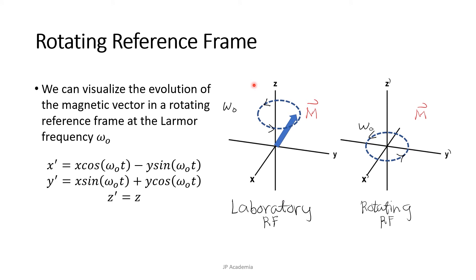Given that the net magnetization vector is rotating at the Larmor frequency, we can conveniently visualize the magnetization vector in a reference frame or a rotating reference frame at the Larmor frequency. We can express the rotated coordinate system as X prime, Y prime, Z prime, which is just the same with the laboratory reference frame.